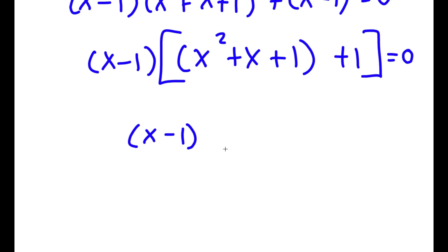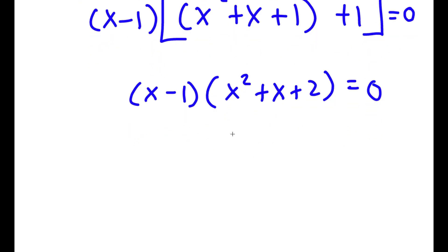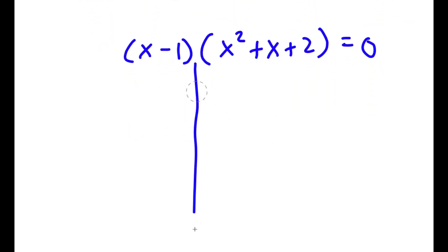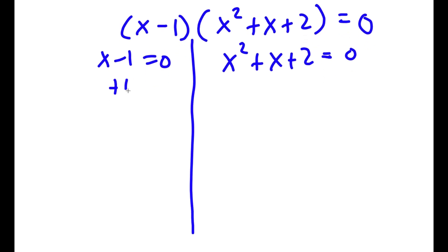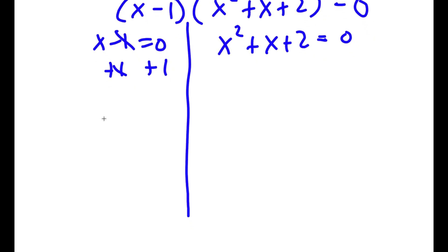Adding these two together I get (x minus 1)(x squared plus x plus 1 plus 1), which is (x minus 1)(x squared plus x plus 2) equals 0. So now this gives me two equations: x minus 1 equals 0, and x squared plus x plus 2 equals 0. For x minus 1 equals 0, I add 1 to both sides and I have x is equal to 1.